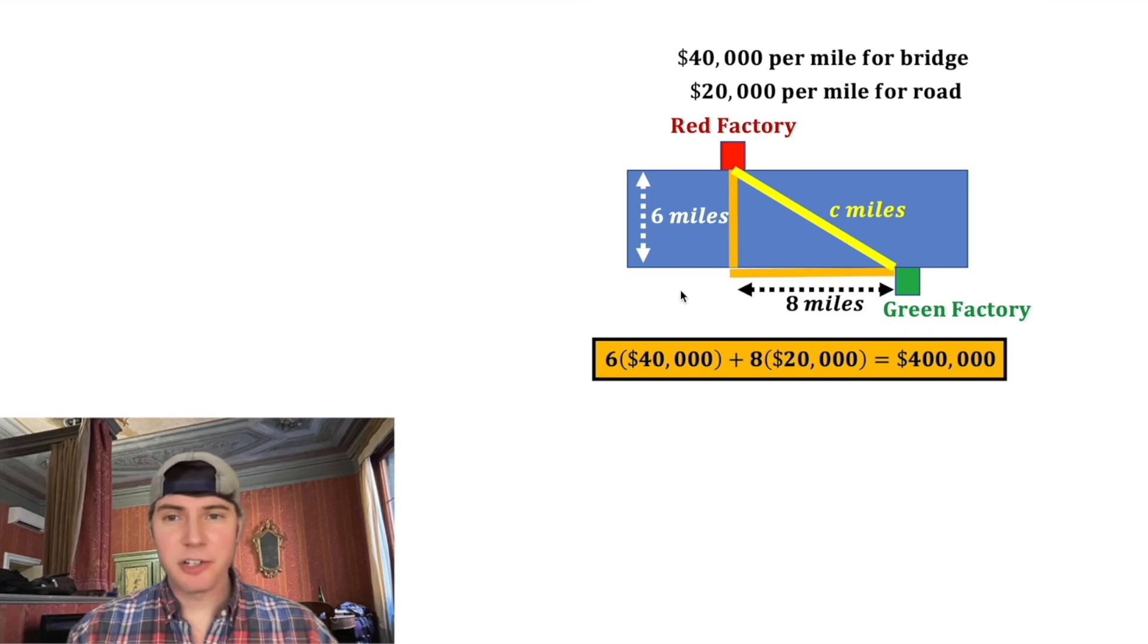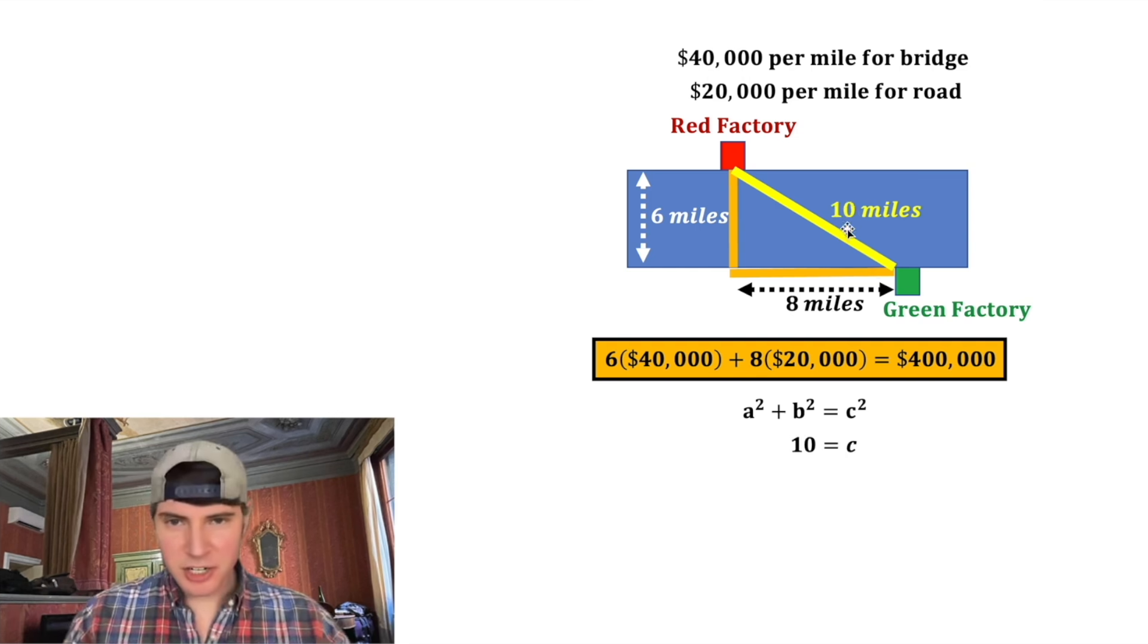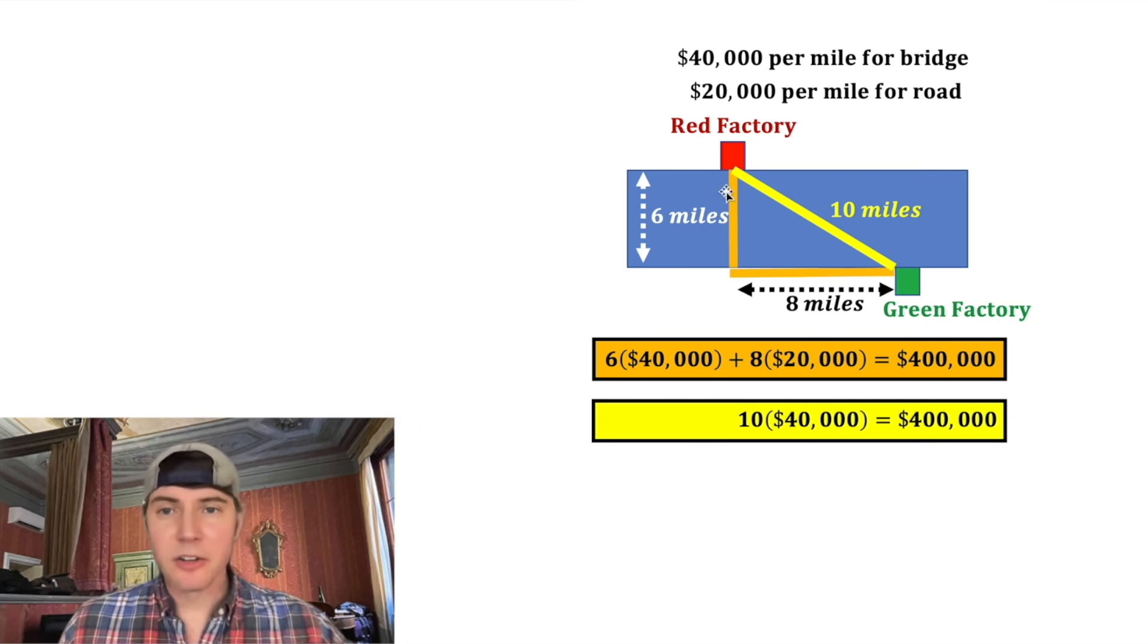This makes a right triangle, so I can find out how far c is by doing a² + b² = c² where a is equal to 6 and b is equal to 8. 6² is 36, 8² is 64. Those add up to 100. Square root both sides and we get c equal to 10. Let's see how much this route will cost. It's going to be 10 miles times the $40,000 for a bridge. That is also $400,000. Either the orange route or the yellow route will both cost me $400,000.